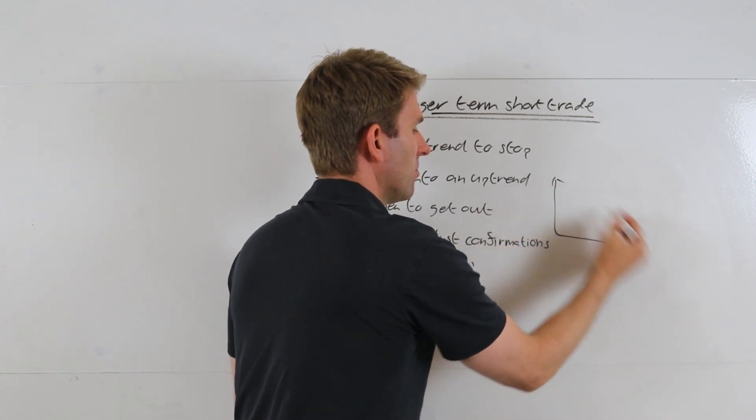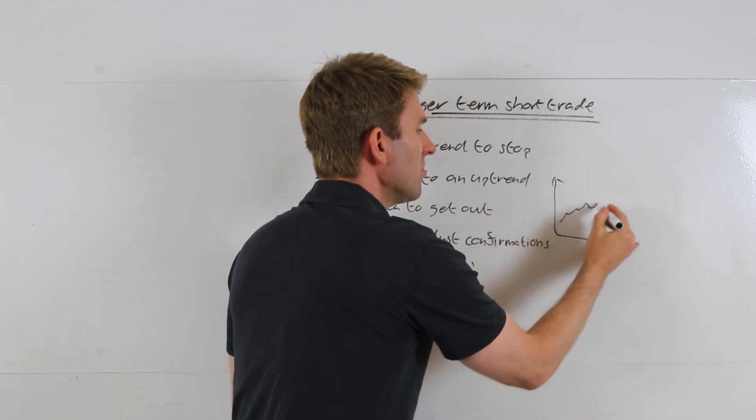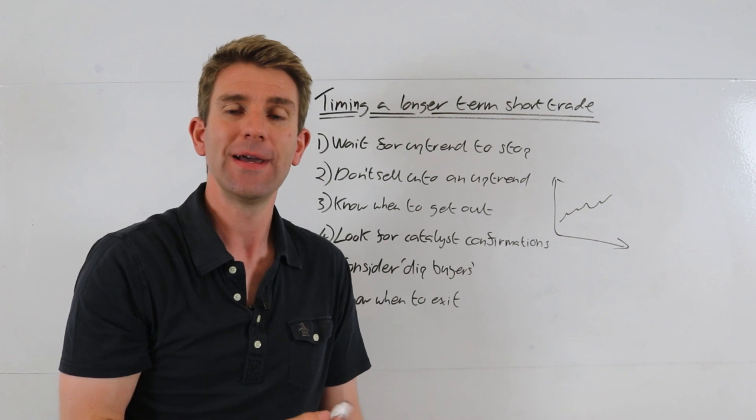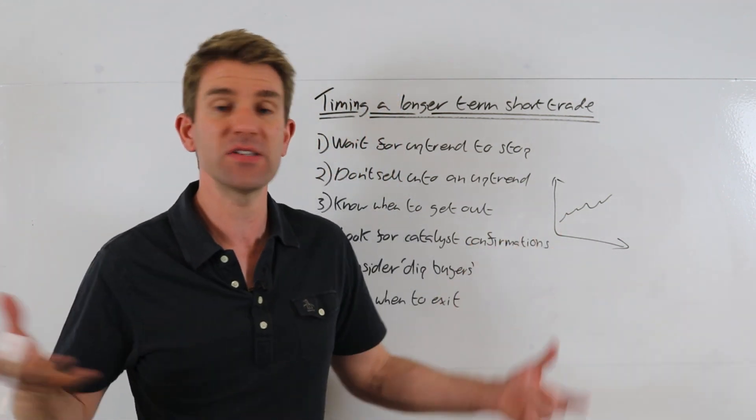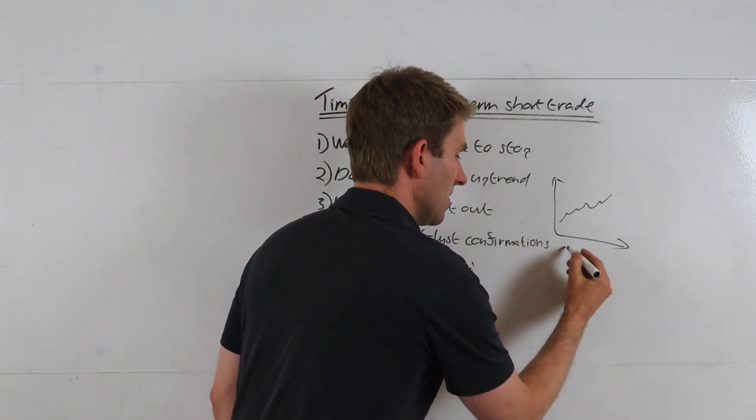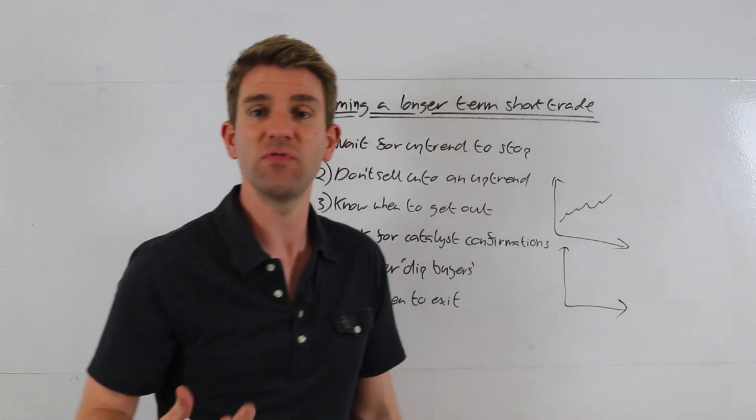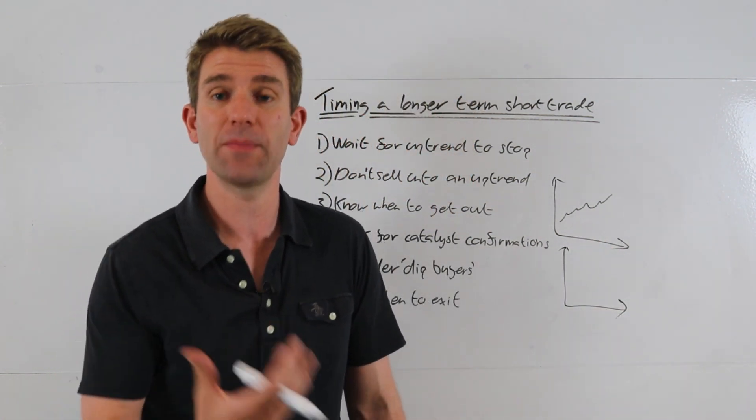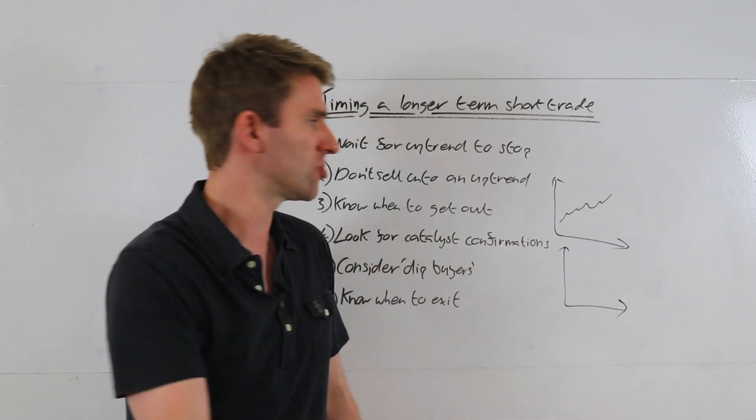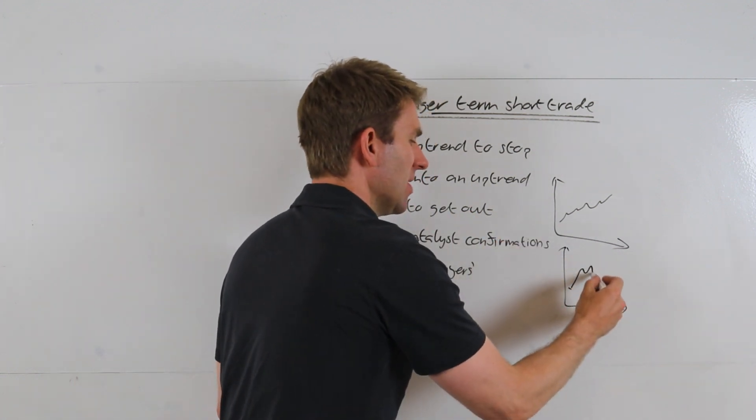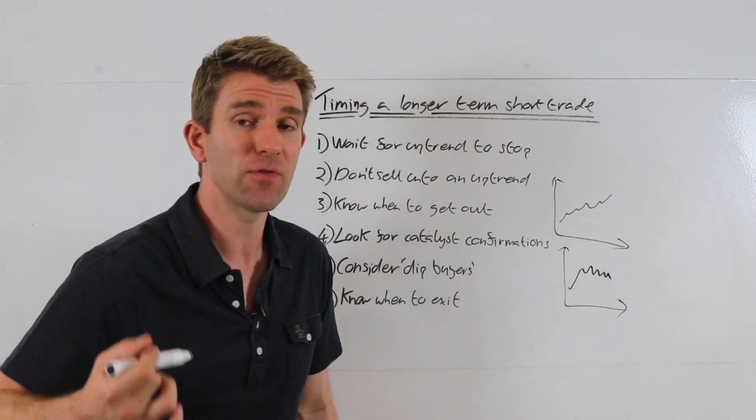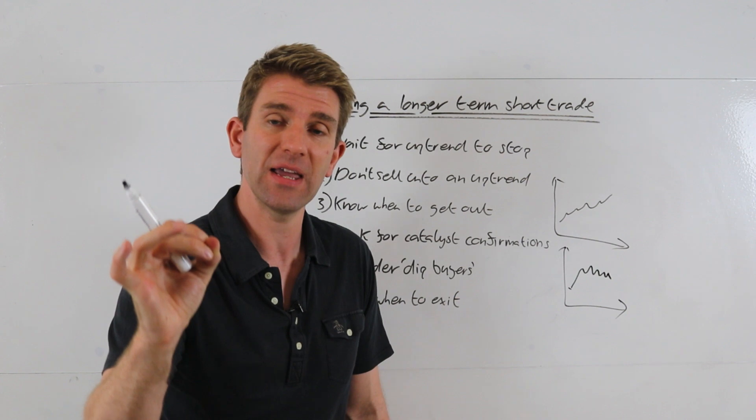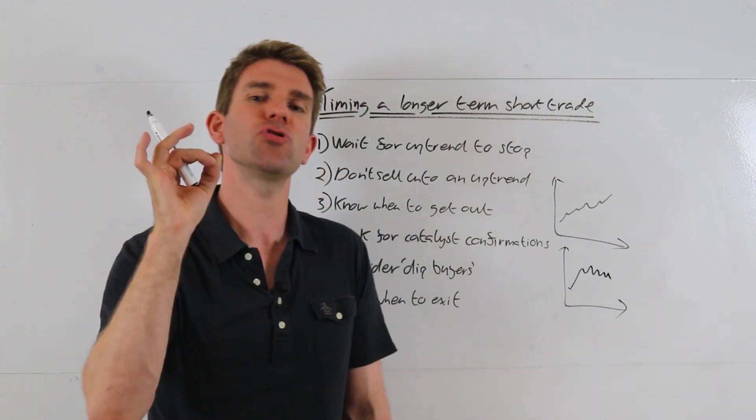But if you think about what's actually happening, when we're in an uptrend like this scenario, money is flowing into the stock. People are believing for whatever reason that this company is going to grow, because that's the only reason why institutional money buys a stock—they believe that the next few years it's going to be worth more and it's going to grow. Now imagine if that stock starts to stagnate for a few months.